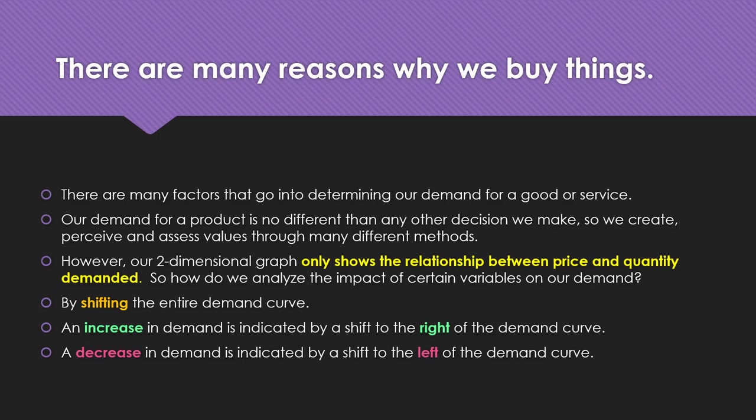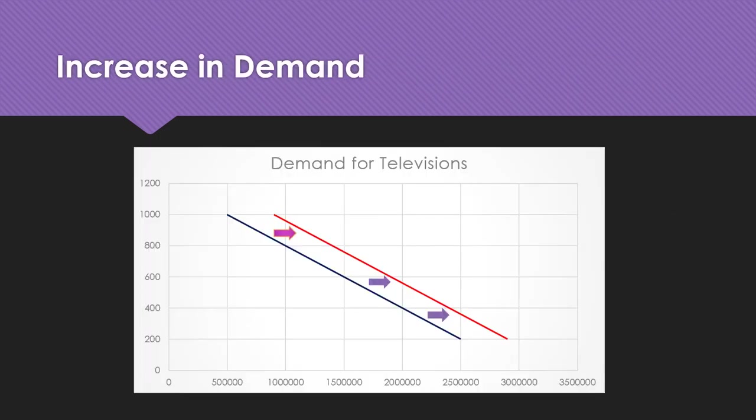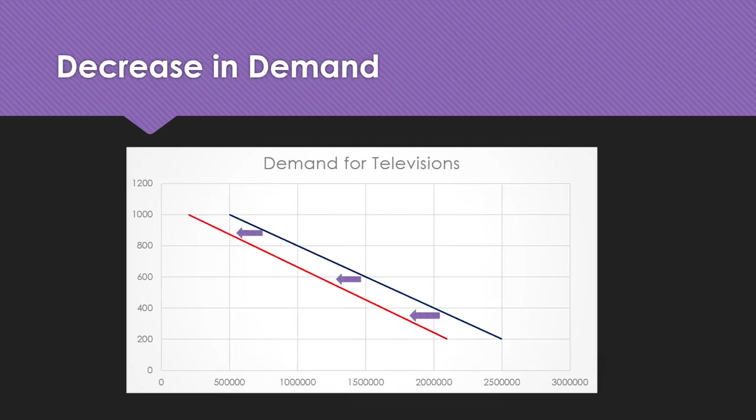Here's an example of an increase in demand: the dark blue demand curve is our original, and as a result of some variable other than price changing, we shift the demand curve to the right — that red line is the new demand curve representing an increase in demand. If we have a decrease in demand, our original dark blue curve shifts to the left to the new point represented by the red demand curve.